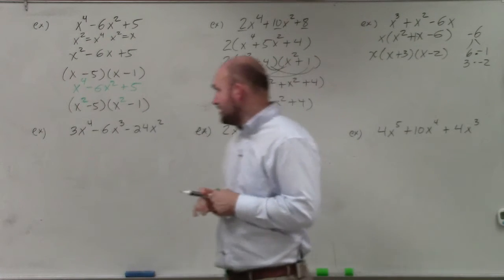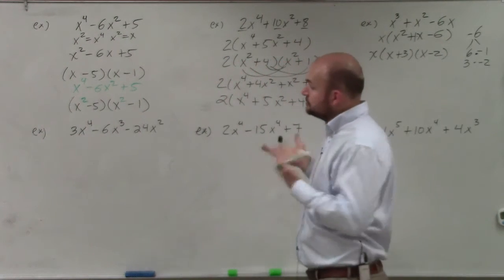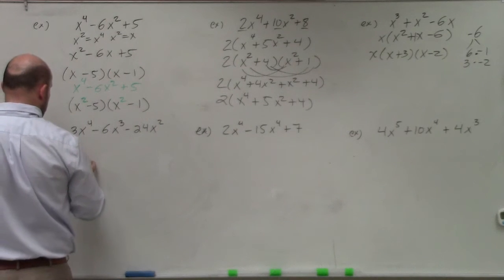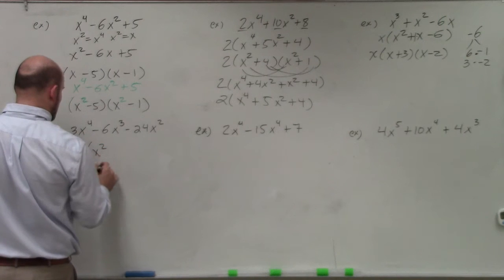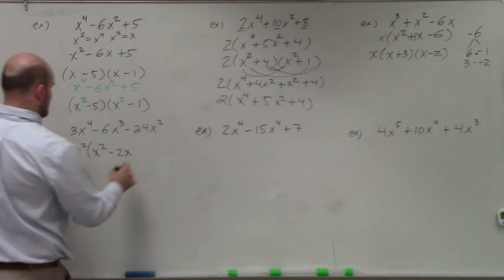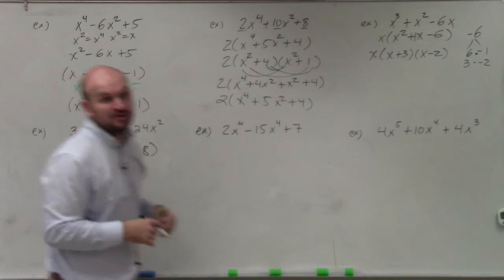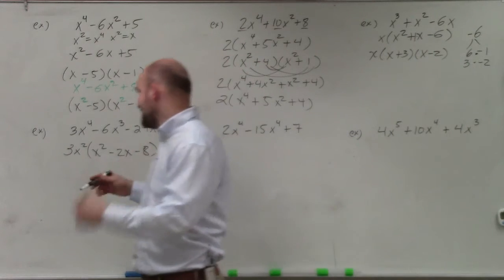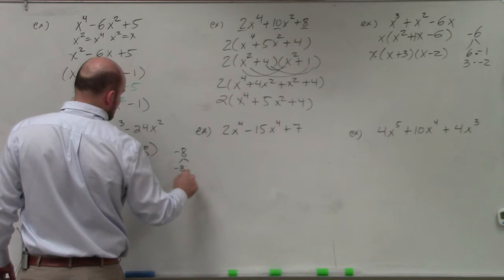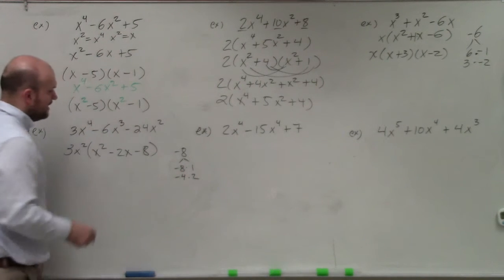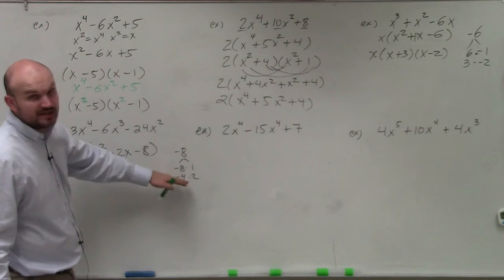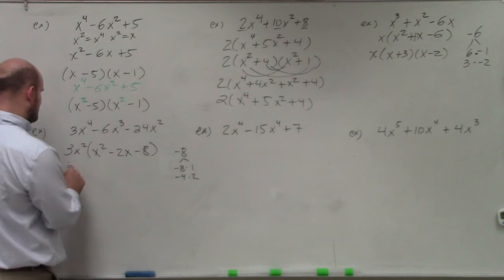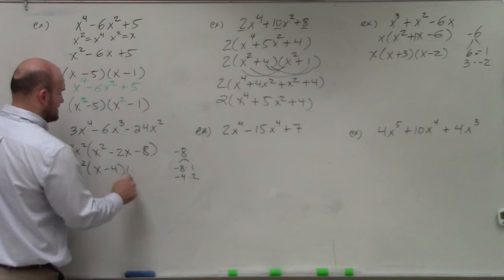In this case I have an x², and all terms have an x and are divisible by 3. So rather than trying to factor directly, let's factor out the GCF. Factoring out 3x² leaves me with x² − 2x − 8. What two numbers multiply to give negative 8 and add to give negative 2? Since my middle term is negative, the larger factor has to be negative. Checking: negative 8 × 1, or negative 4 × 2. Negative 4 plus 2 gives me −2. So my two factors are −4 and 2, and the factored form is 3x²(x − 4)(x + 2).